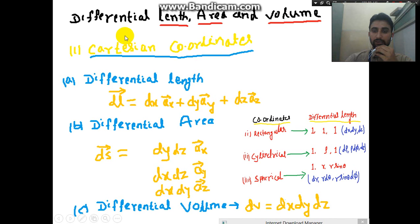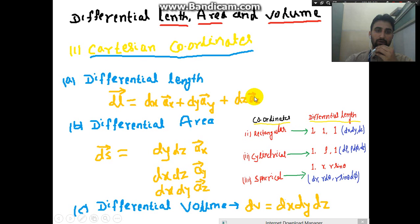For Cartesian or rectangular coordinates, your differential length dl has x, y, z components: dx in the direction of ax, dy in the direction of ay, and dz in the direction of az. Differential length is a vector quantity, which is why it has all three directions.